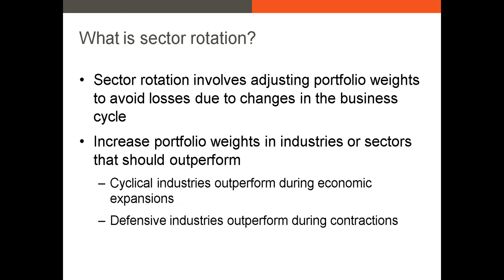Now that we've identified the industry and its lifecycle stage, what happens next? The short answer is sector rotation — the process where we adjust the weight of each industry and sector in our portfolio to avoid losses due to changes in the business cycle. We've already identified macroeconomic conditions, so sector rotation takes that information along with information about the industries our firms operate in, and we adjust weights to maximize return based on how each industry is likely to perform at a given stage of the business cycle. We want to identify which firms are in cyclical industries and which are in defensive industries.